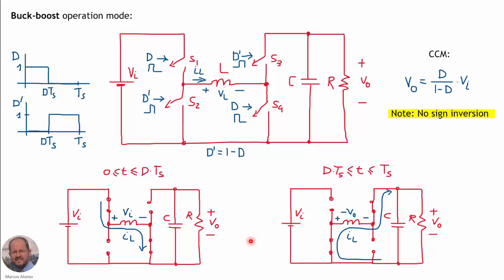The operation is equivalent to the buck-boost converter, with one important advantage: the output voltage ratio is D over (1 minus D) times the input voltage, but there is no polarity inversion. The output voltage has the same sign as the input voltage, which is a very important advantage, especially when we want to do closed-loop control to measure the output voltage.